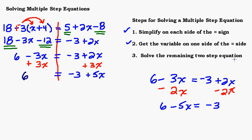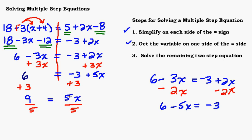That's step two — getting x's on the same side by adding or subtracting an x term from each side. Now step three is to solve the remaining two-step equation. I need to get rid of the negative 3 and the 5 to isolate x. To get rid of the negative 3, I add 3 to both sides, giving me 9 equals 5x. Then I divide by 5 to cancel, giving x equals 9 fifths, or 1 and 4 fifths, or 1.8 — all the same.